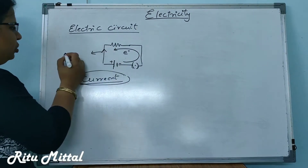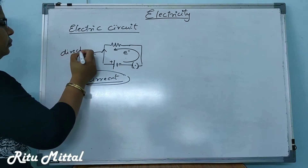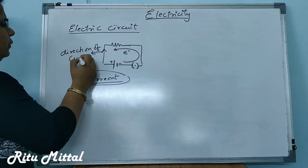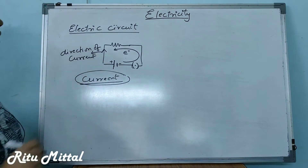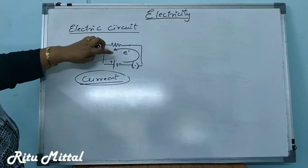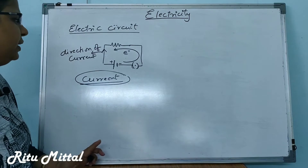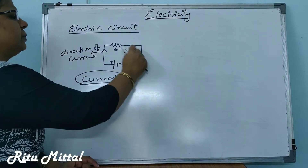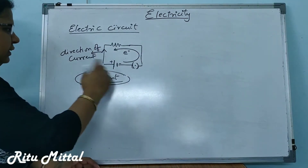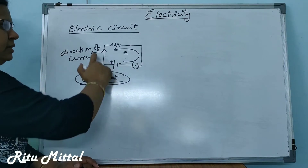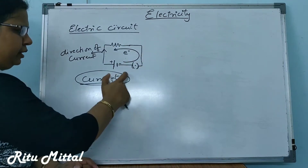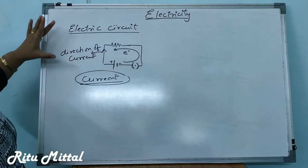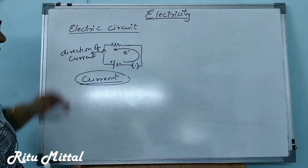This is the direction of current — it is in the opposite direction to the electron. Electrons flow from the negative terminal, and the current flows from the positive terminal to the negative terminal. They are in opposite directions.